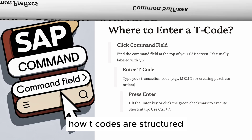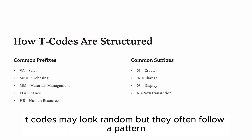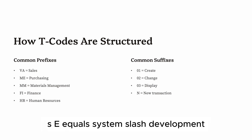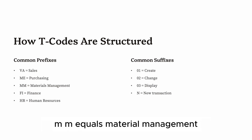Part 3: How T codes are structured. T codes may look random, but they often follow a pattern. VA stands for Sales, ME for Purchasing, SE for System/Development, MM for Material Management, and FB for Finance.